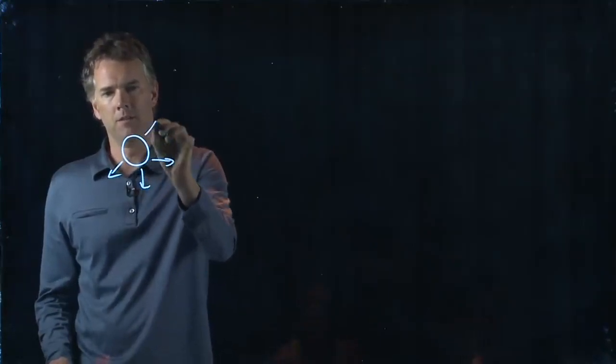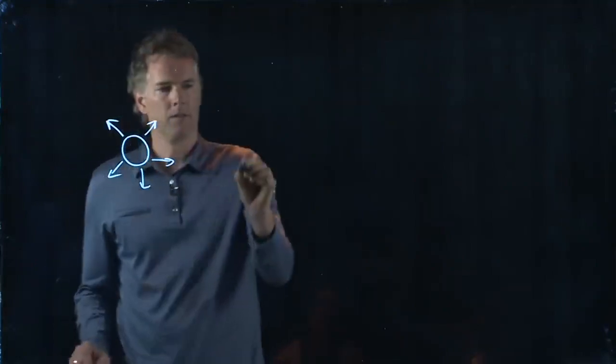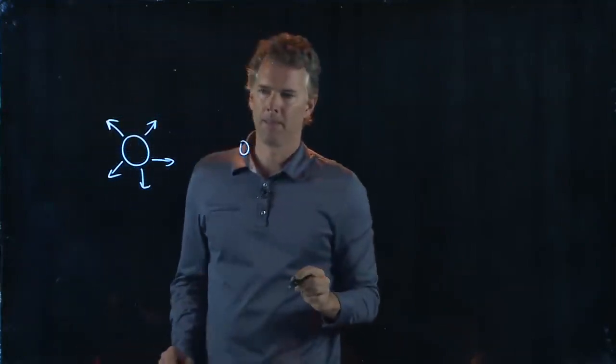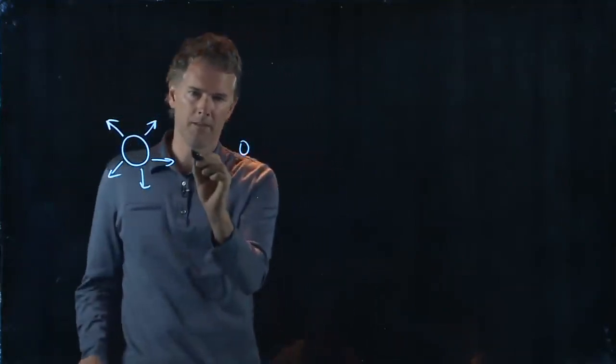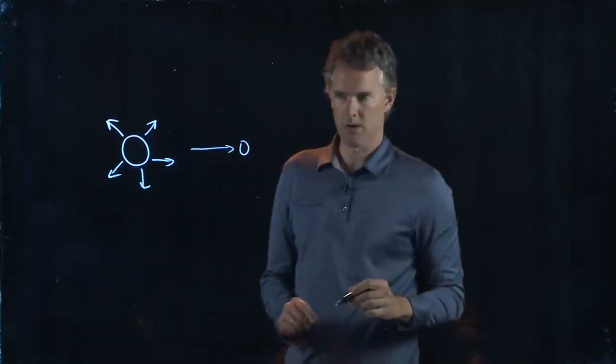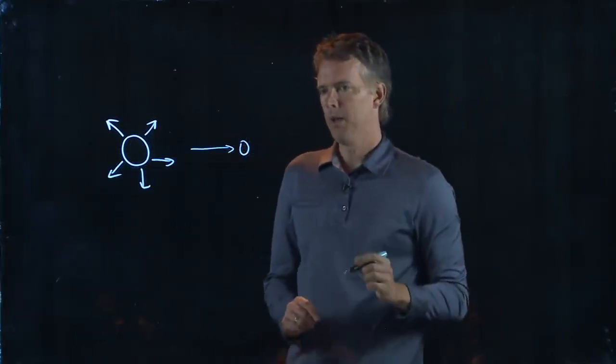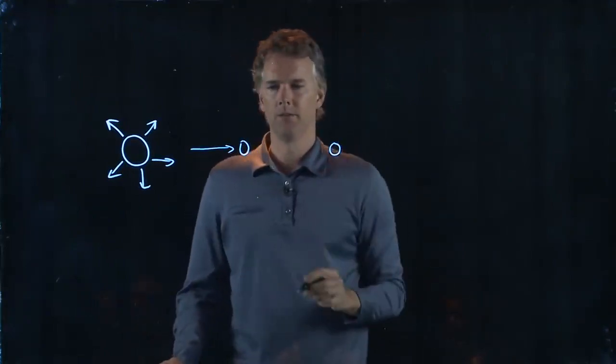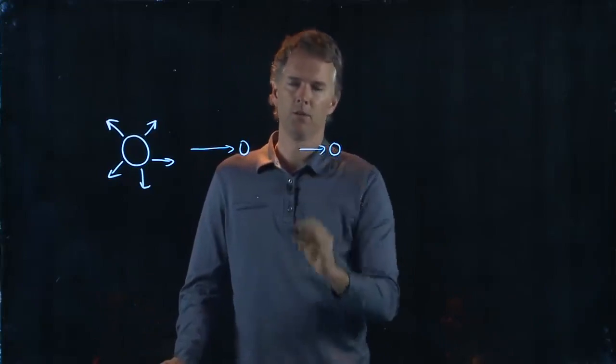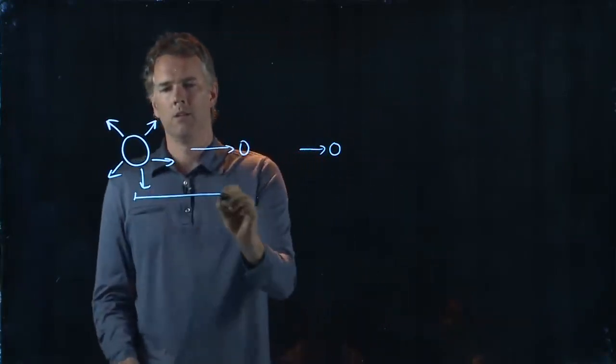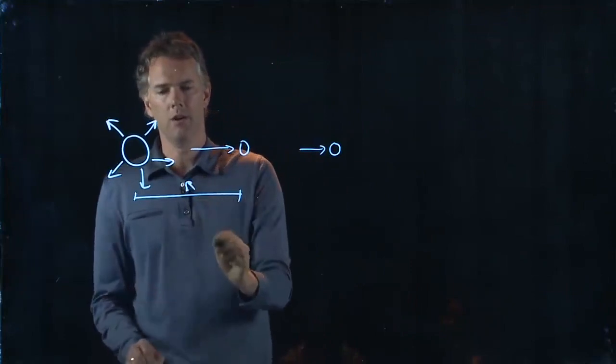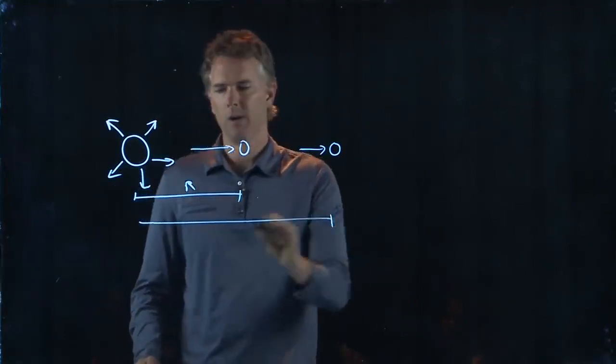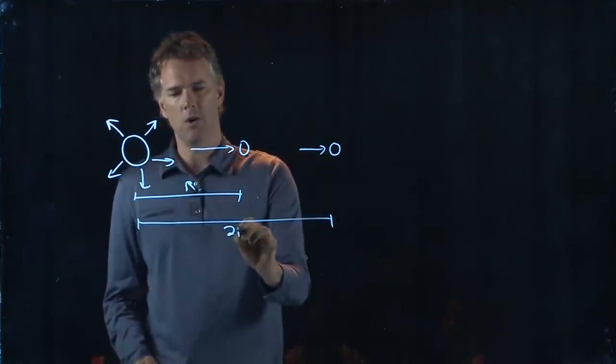So let's go back to our picture. Here's our Sun. Here's the Earth. Okay, some of that sunlight is getting us here on the Earth. But now we're going to take that Earth and move it out to a distance twice as far away. So if this was R, now we are 2R away.